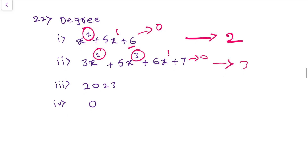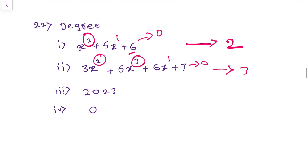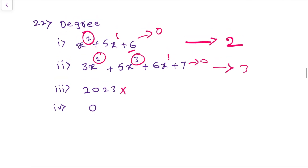What about the degree of any constant? For example, 2023. 2023 can be written as 2023 into x power 0. So here, power is 0, so the degree is 0. The degree of any constant is 0. Always remember: degree of any constant is 0.